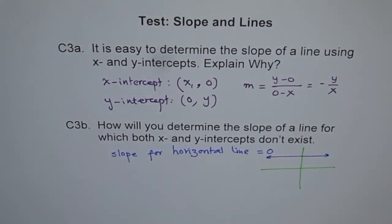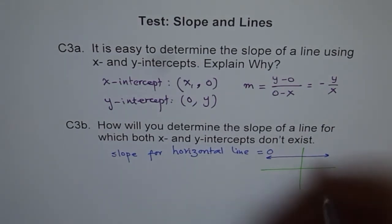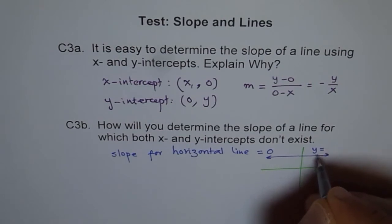Do you see that? Slope is 0 for horizontal line. y equals to some value, constant. So here, say y equals to, let's say this point is 1. Slope is 0. y equals to mx plus m is 0.